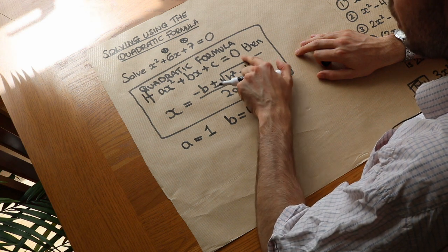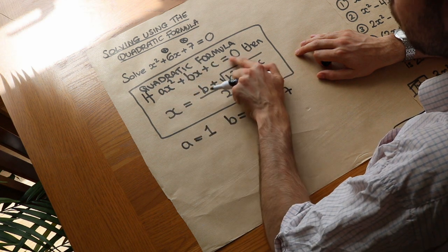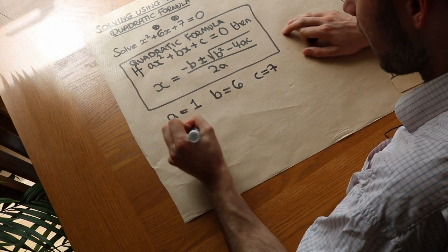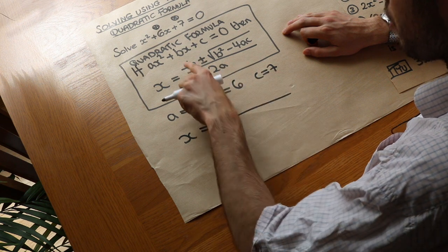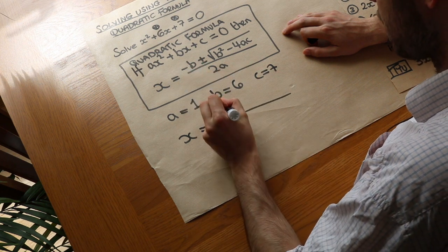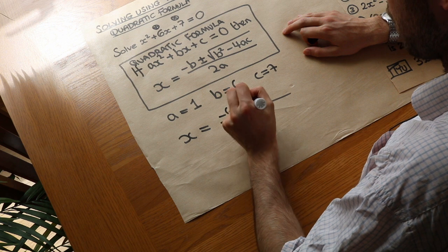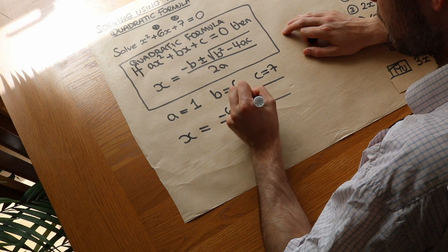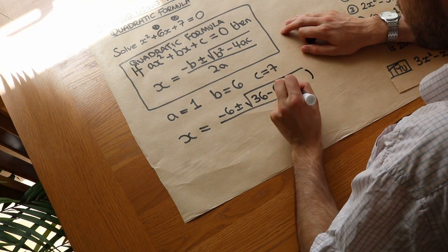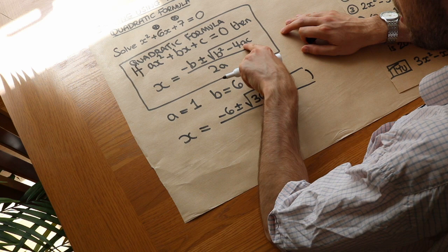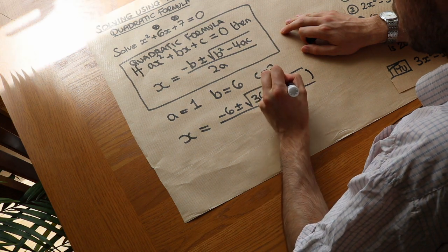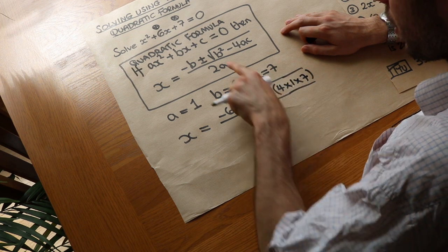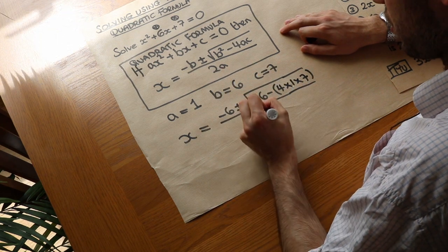Make sure that you have zero on one side — this quadratic formula only works if you've got zero on one side, and we do. So let's substitute into this equation. We've got x is equal to a fraction: minus b, so minus 6, plus or minus the square root of b squared — so 6 squared, which is 36 — minus 4 times a times c, so 4 times 1 times 7, all over 2a, which is 2 times 1, giving 2.